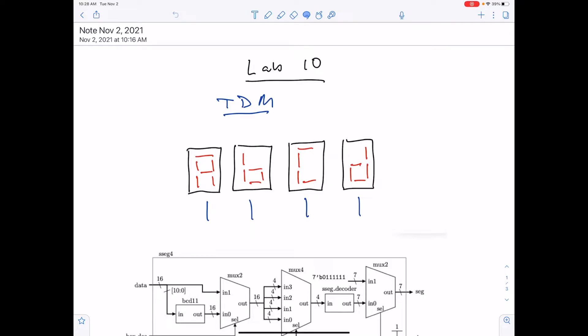Time division multiplexing sounds like a fancy term, but basically we're going to turn on these digits one at a time, each has its own time slot, and we're going to do it at a rate that makes the display look good. The thing is, the underlying clock speed of the basis three boards is 100 megahertz. So if you just change the display selection on each cycle of the clock, that would be switching through too fast. The displays wouldn't have time to physically react and turn on.